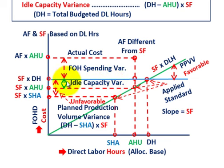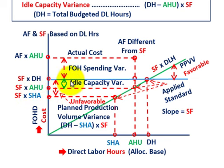The planned production variance was the difference between your standard fixed rate times total denominator hours versus actual hours used. The idle capacity variance was the difference between the standard fixed overhead cost rate times denominator hours versus actual hours used — that was your idle capacity variance.